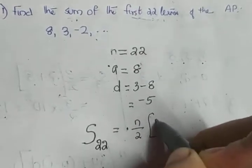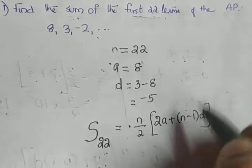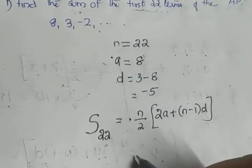n/2 into 2A plus (n-1) into D. We do not know the last value, the last term. That is the reason why we are applying this formula.